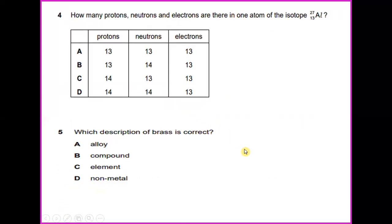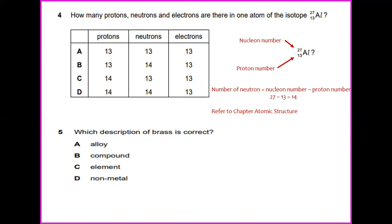Number 4. How many protons, neutrons and electrons are there in one atom of isotope 27 of mass number and 13 represents proton number of aluminium? In order to get the value of neutron number is mass number minus proton number. In this case, we already know about the mass number of aluminium to be 27 and proton number is 13.